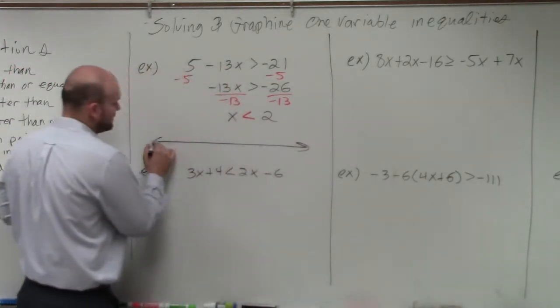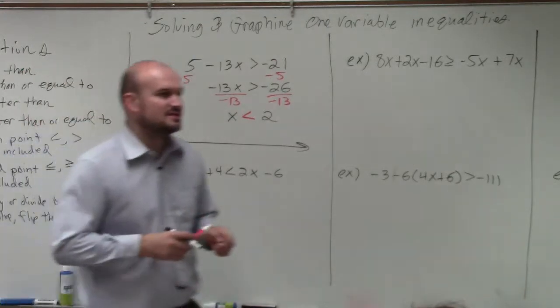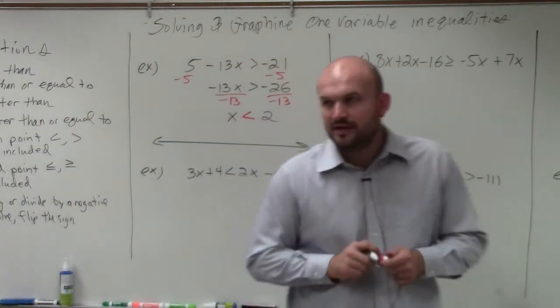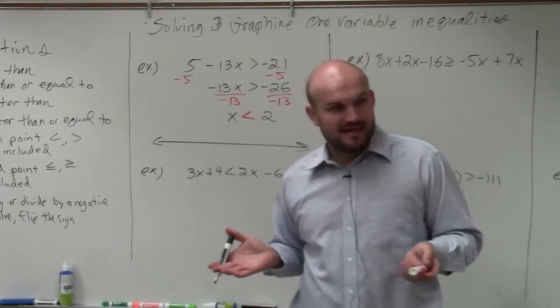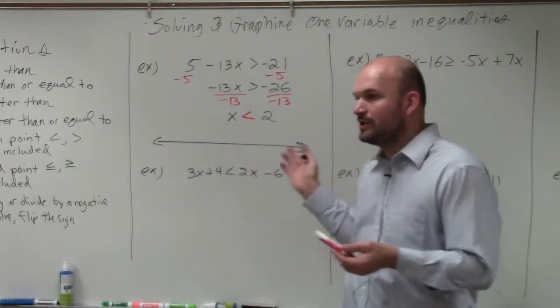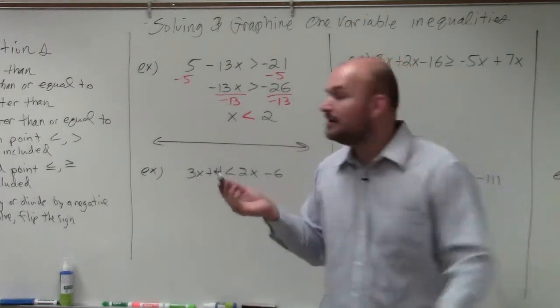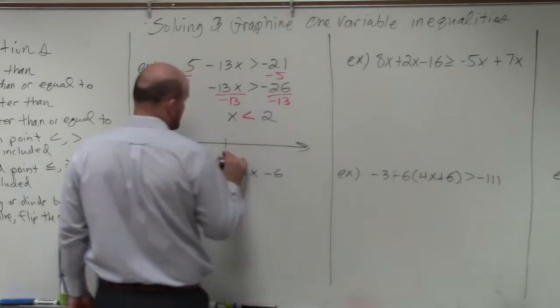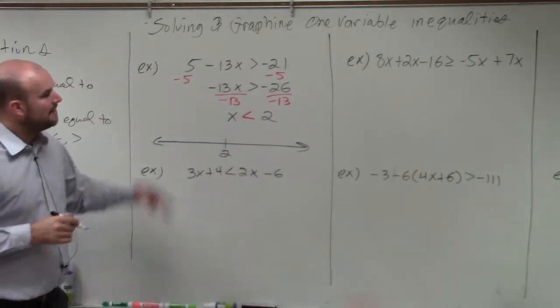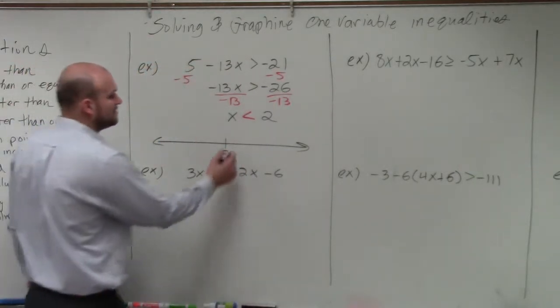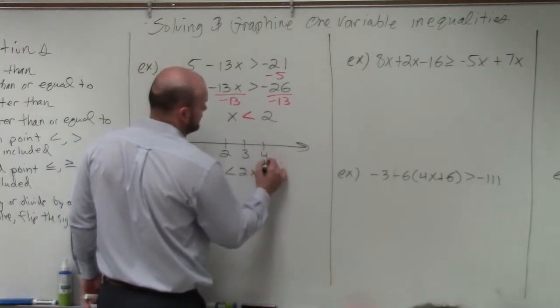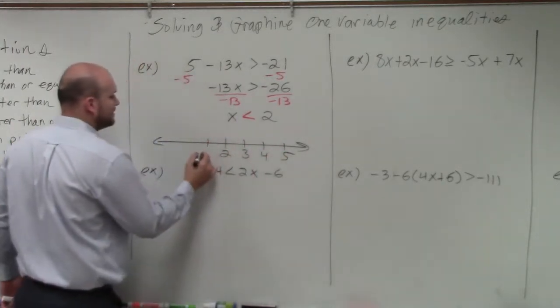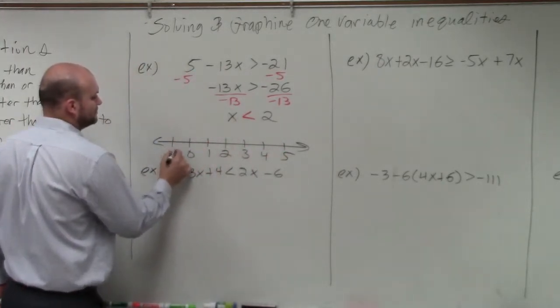Now we need to graph our solution. A lot of times students say they always start with 0 in the middle. Yeah, 0 works sometimes, but what if this was like 200? You wouldn't want to start at 0 and go to 200. So my recommendation is always start with your solution right in the center. Then values to the right are going to be numbers that are larger, and numbers to the left are going to be numbers that are smaller.